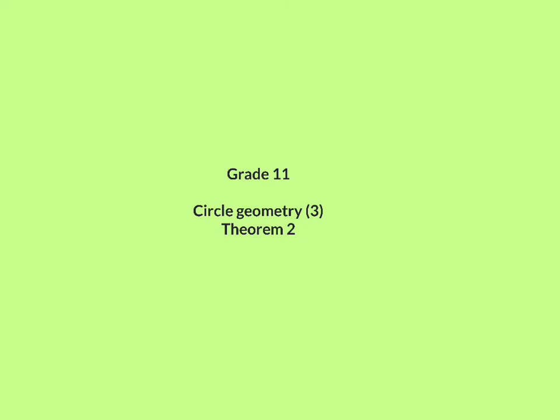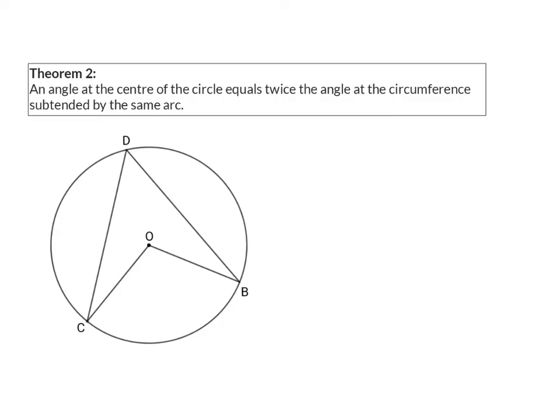In this lesson, we look at Circle Geometry Theorem 2. An angle at the center of the circle equals twice the angle at the circumference subtended by the same arc.